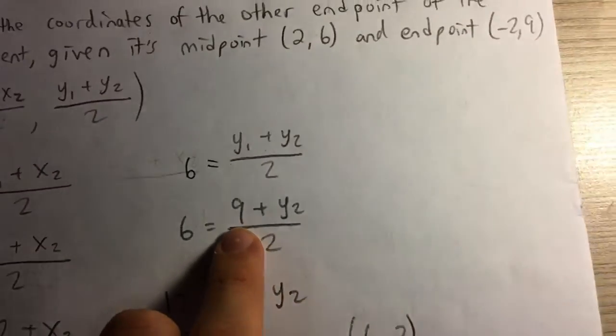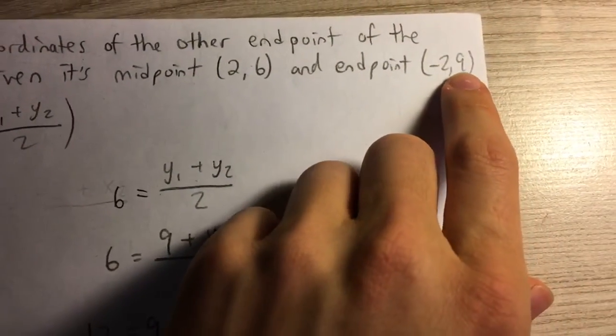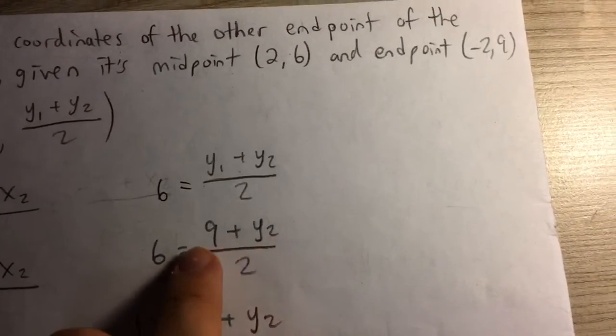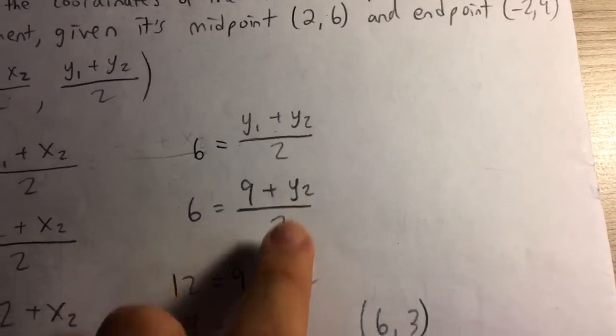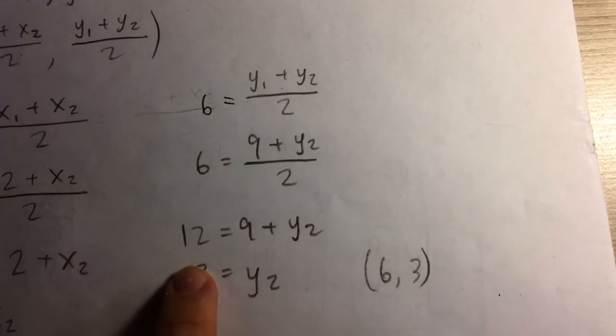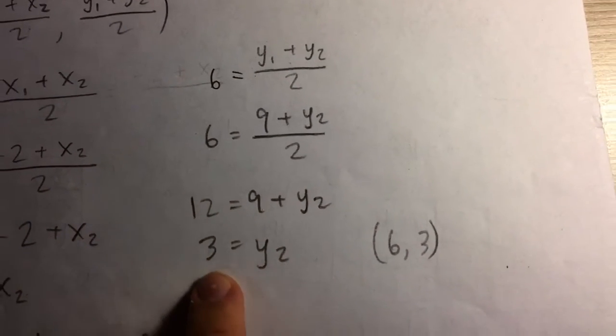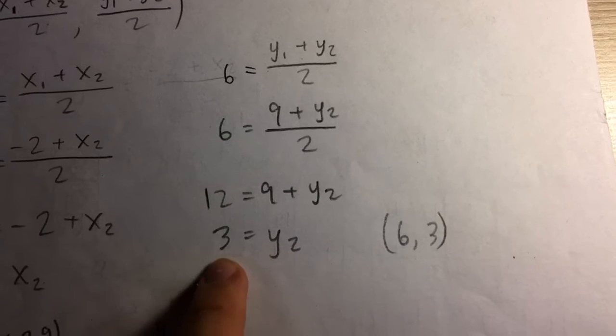Similar thing with the y-coordinate. I can plug in one of the endpoints into either y1 or y2. Solve for the other one. Multiply both sides by 2, so subtract 9 from both sides. I get y2 is 3.